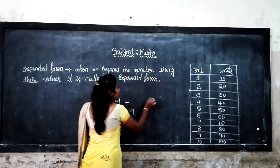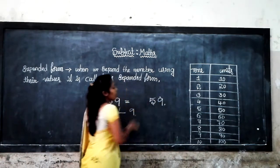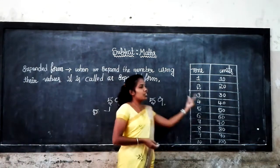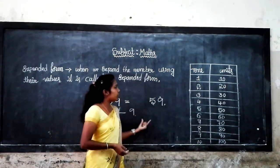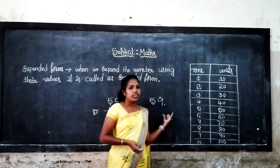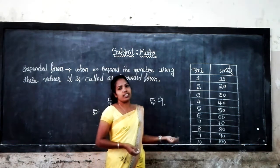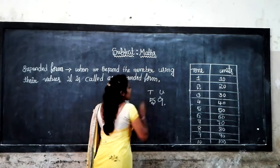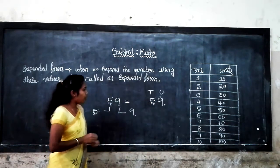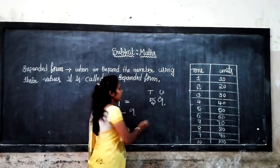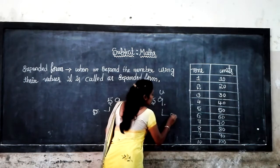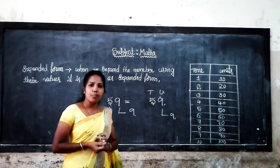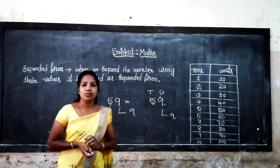As I told you, in the unit place, numbers are the same for place value. Now we find out the face value of 59. In the unit place, numbers are the same — place value and the face value are equal.